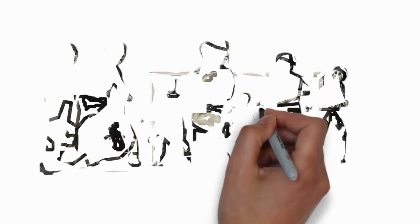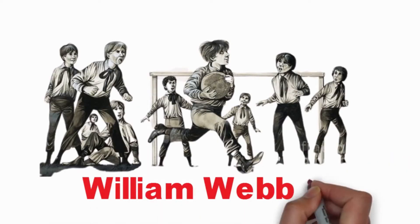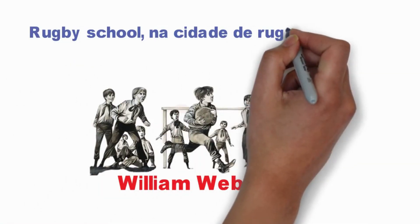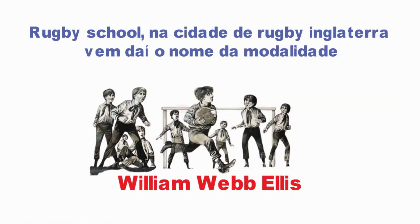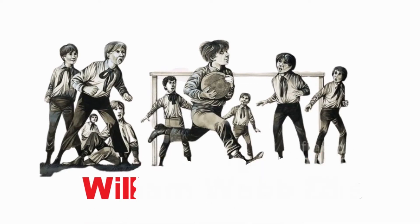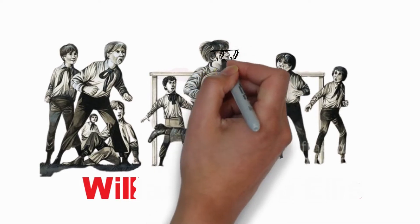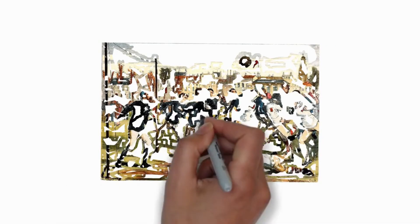A versão mais difundida sobre a origem do esporte está relacionada com uma jogada irregular de William Webb Ellis, que durante uma partida de futebol em 1823, na Rugby School, na cidade de Rugby, na Inglaterra — é daí que surge o nome da modalidade. O Will, achando a partida chata, pegou a bola com a mão e saiu correndo até o outro lado do campo. Muitos gostaram da ação e correram junto, outros foram reclamar. Porém, a história do surgimento do rugby não é tão simples assim.